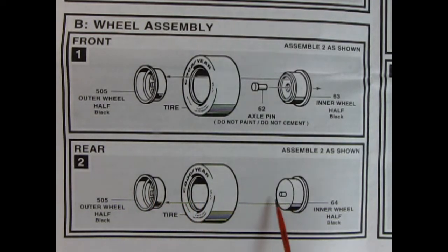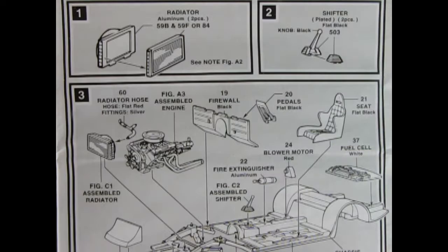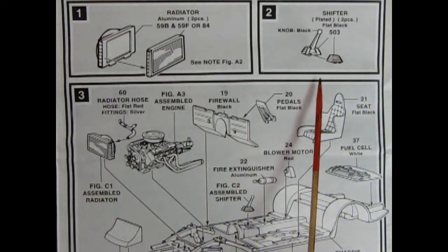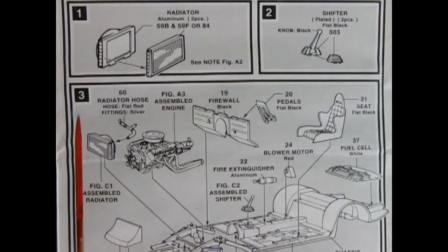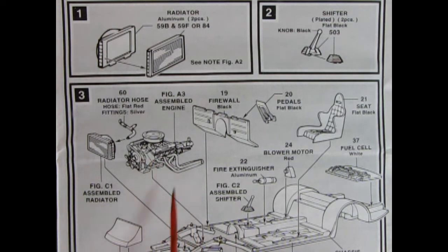Our next panel shows the chassis assembly. We have a two-piece radiator gluing together and a two-piece shifter knob here. And then we've got our nice racing seat going on our chassis in panel three. Engine drops in. Radiator duct goes in front. There's a transmission mount goes up underneath. And then our engine will hook in. And then we've got our radiator hoses going into the radiator and on top of the engine block. We've got our firewall, our pedals, our seat, fuel cell, blower motor, fire extinguisher, and the shifter. All this goes onto our floor.